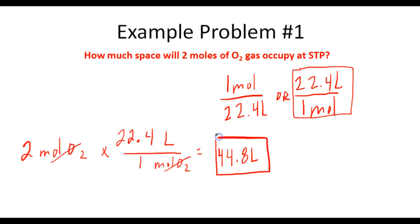And this makes sense — if one mole occupies 22.4 liters, then doubling that means two moles should occupy 44.8 liters.